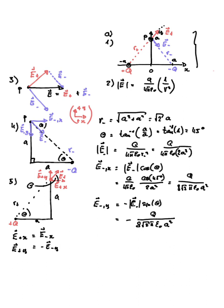The second part asks how the magnitudes of E+ and E- compare. The magnitude of the electric field for a point charge is q over 4π ε₀ r². The distance from each charge to point P is the same: both right triangles have legs of length a, so r = √(2)·a. Since the distance is the same and all other parameters are equal, the magnitudes of the two electric fields are equal.